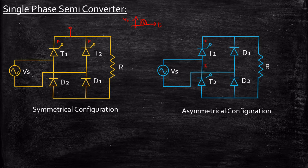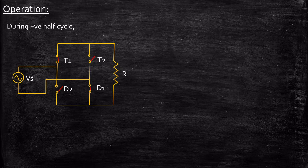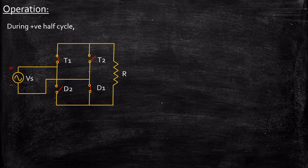Our entire analysis going forward will focus on symmetrical configuration. During positive half cycle, the supply voltage will be positive and negative. The anode of T1 is connected to positive and cathode of diode D1 is connected to negative. As a result, T1 and D1 will be forward biased, T2 and D2 will be reverse biased, and current starts flowing through this path.